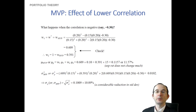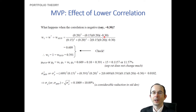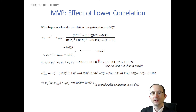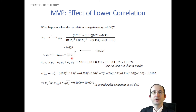How would we do if the correlation were actually negative? All we need to do is plug in the new updated correlation — let's say negative 0.30 — into our minimum variance portfolio weight formula. This gives us a different weight on asset one and a different weight on asset two.